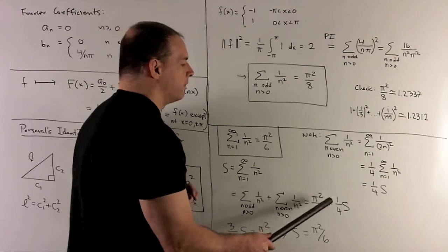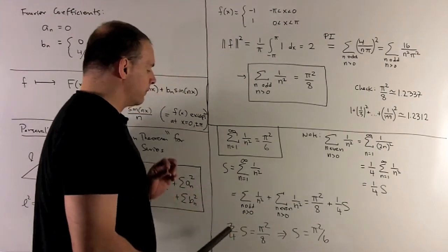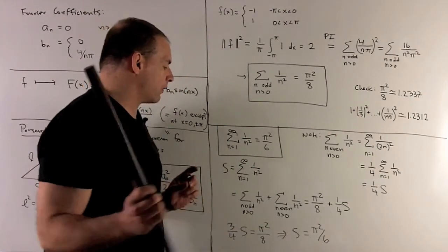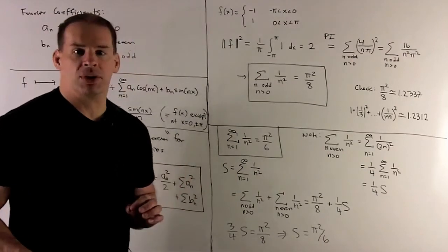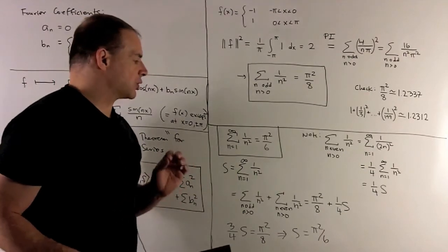So, what can we do? I can push the 1 fourth s to the other side. We have 3 fourths s equals pi squared over 8. And then, if we multiply both sides by 4 thirds, we'll get pi squared over 6.